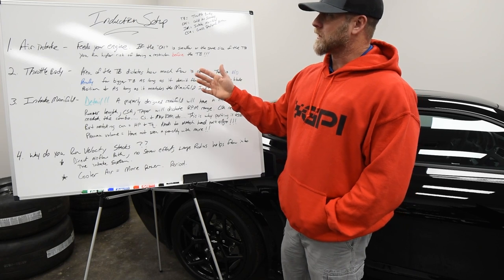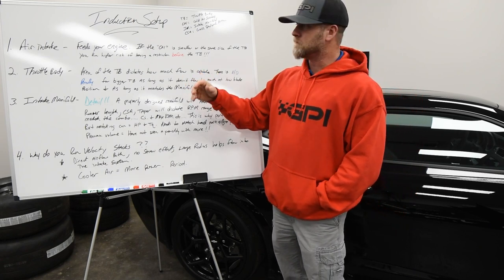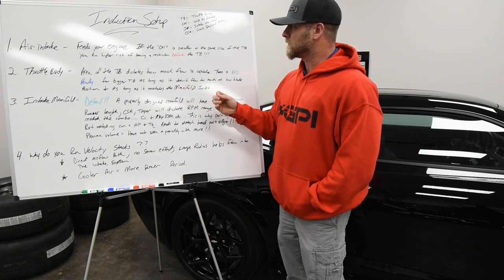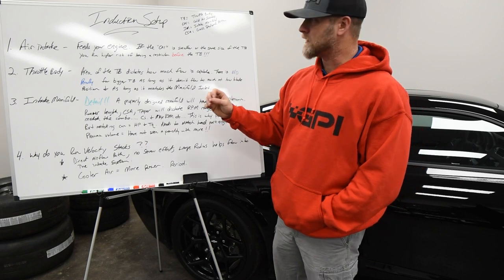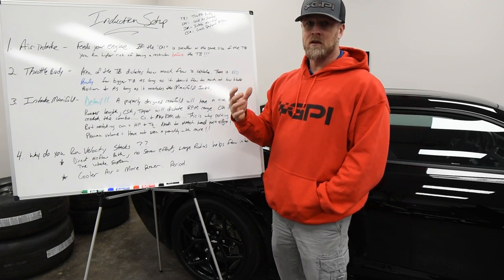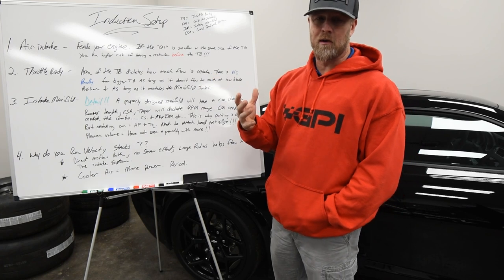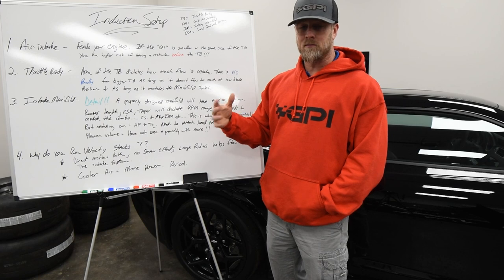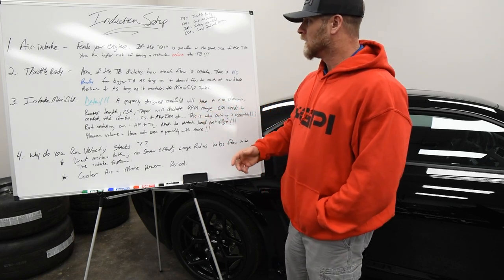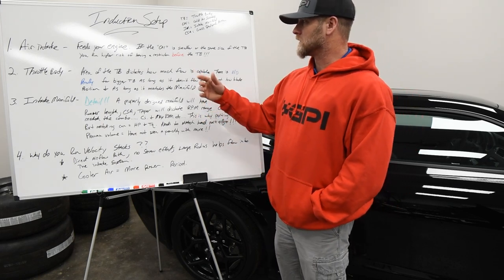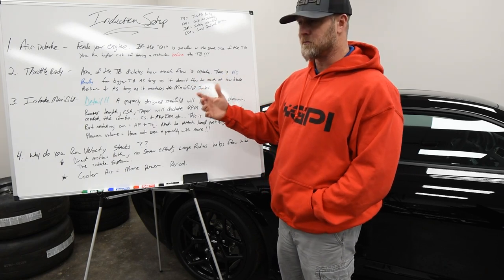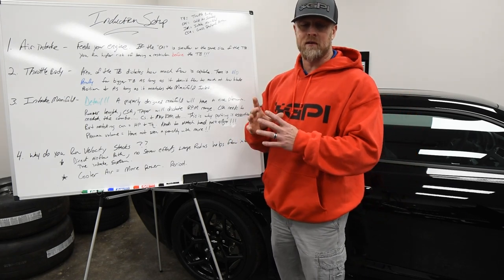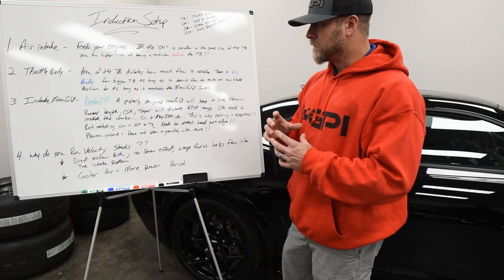The first and most crucial thing we look at is your air intake setup. Think of it almost like a straw — that's what feeds your engine. It connects the filter to the throttle body. If the cold air intake is smaller than or the same size as your throttle body, you run a very high risk of having a restriction in your induction system before the throttle body. Your throttle body may not even be the limiting factor for airflow.